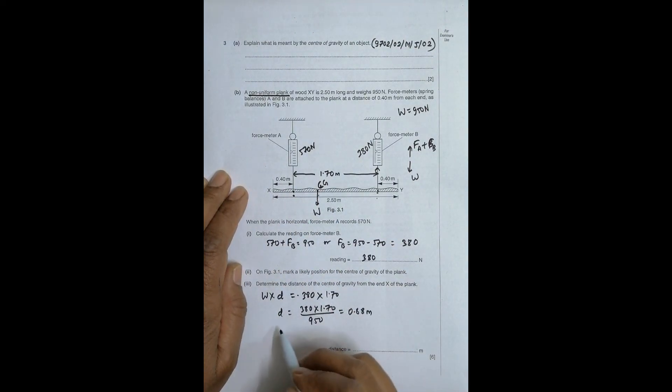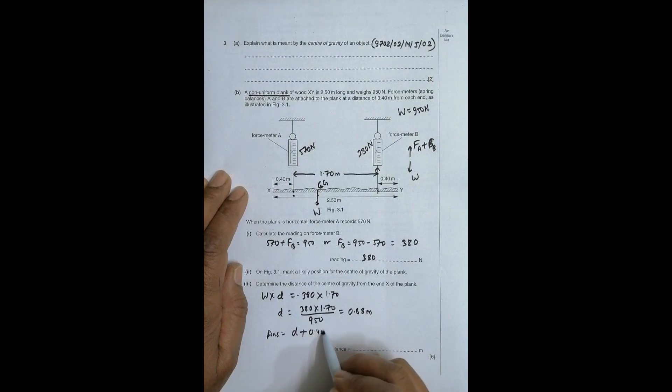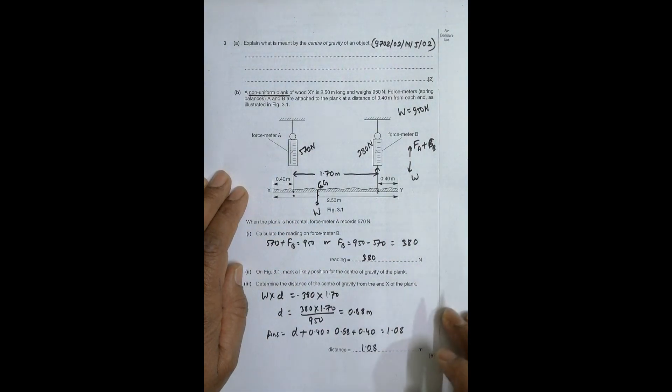So the whole distance that is required here is, the answer is equal to this D plus 0.40. So equal to 0.68 plus 0.40 equal to 1.08 meters. So the distance is 1.08 meters from here to here. So this is the answer.